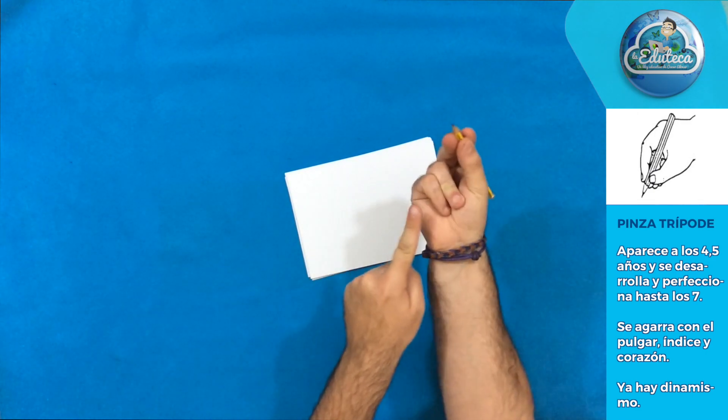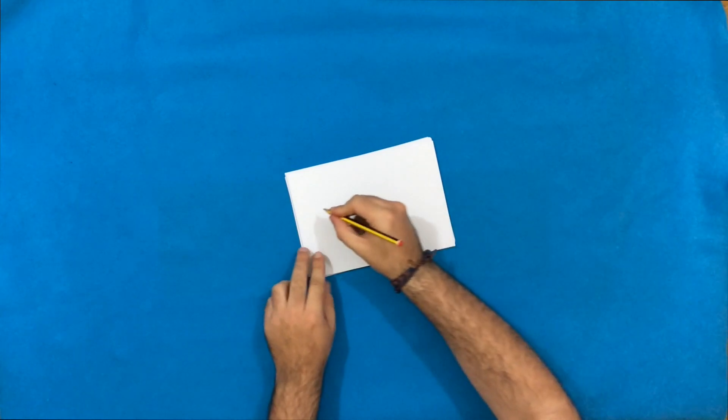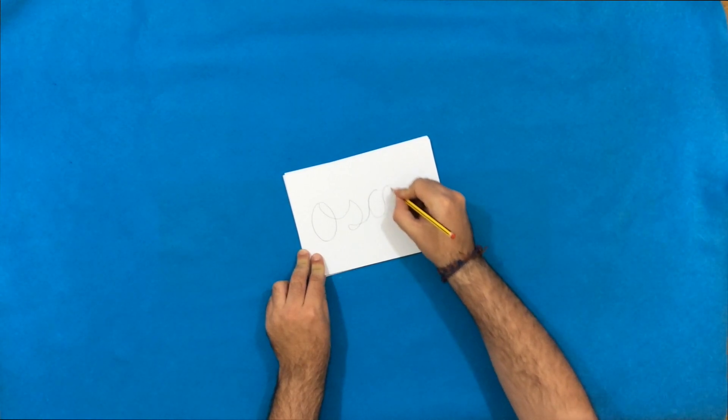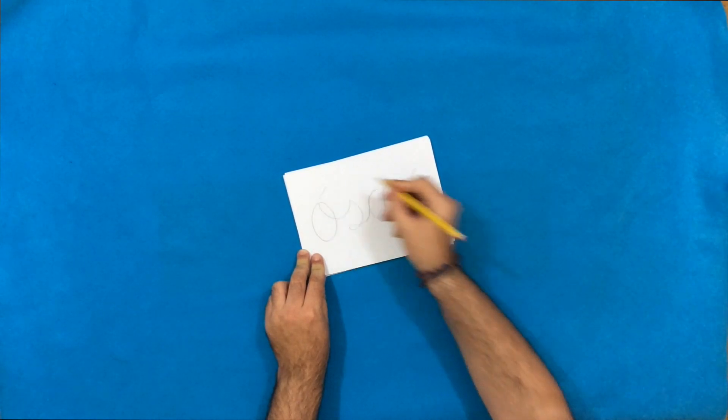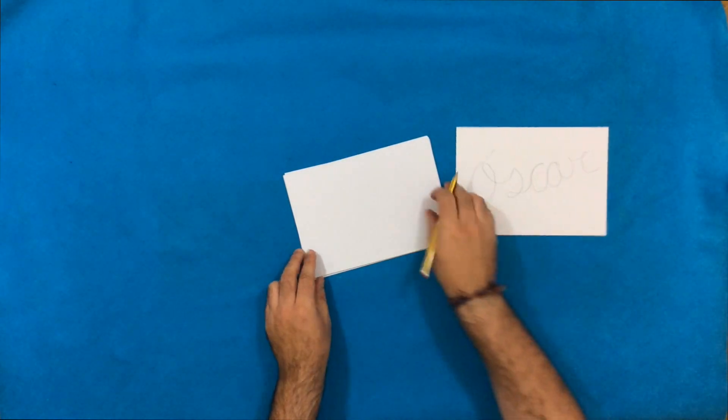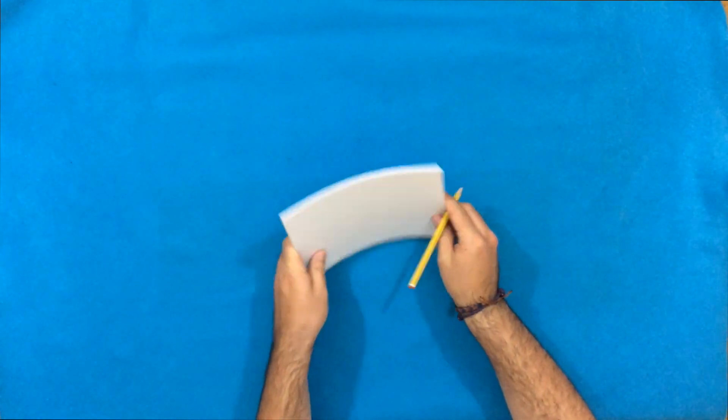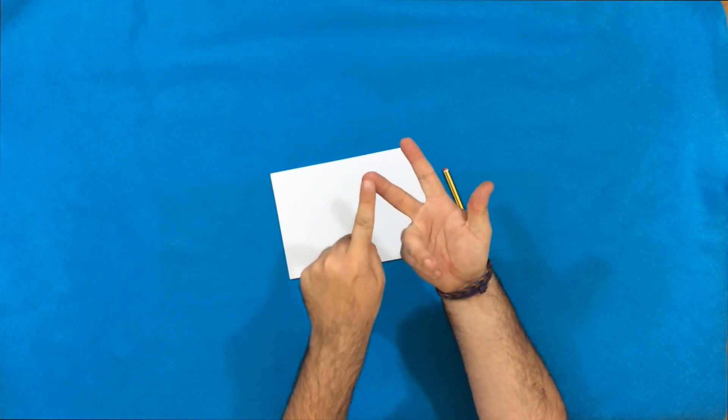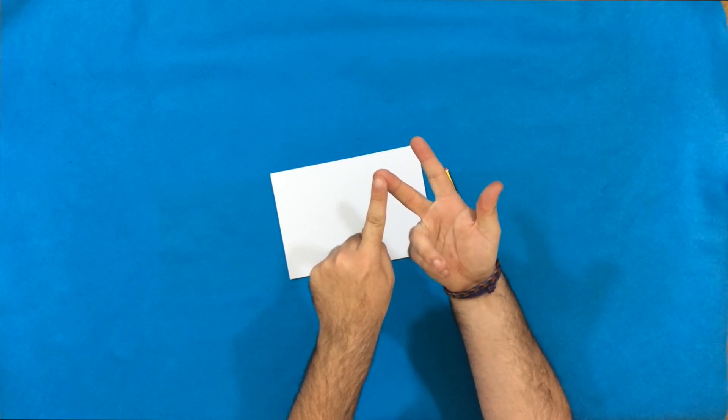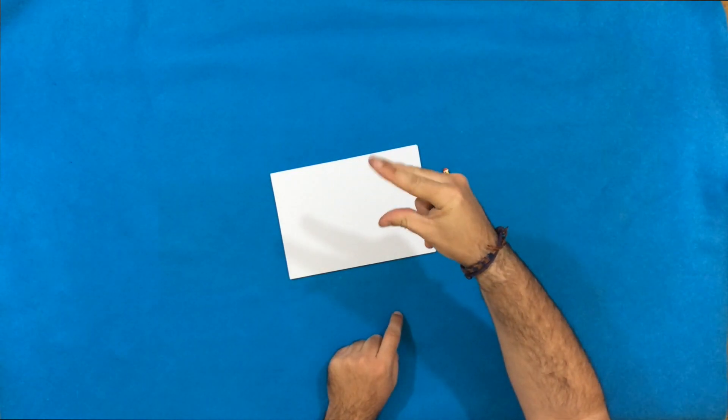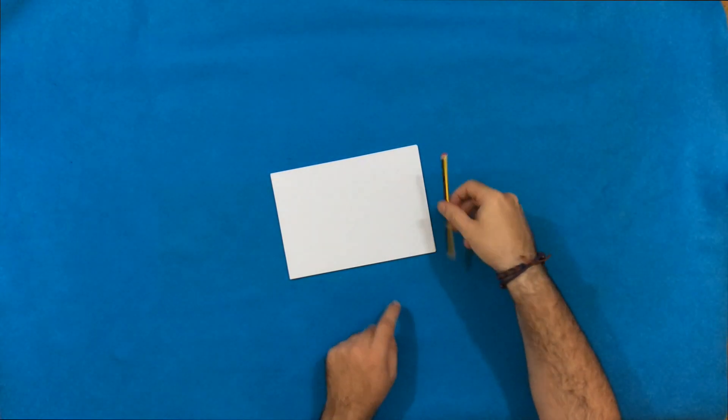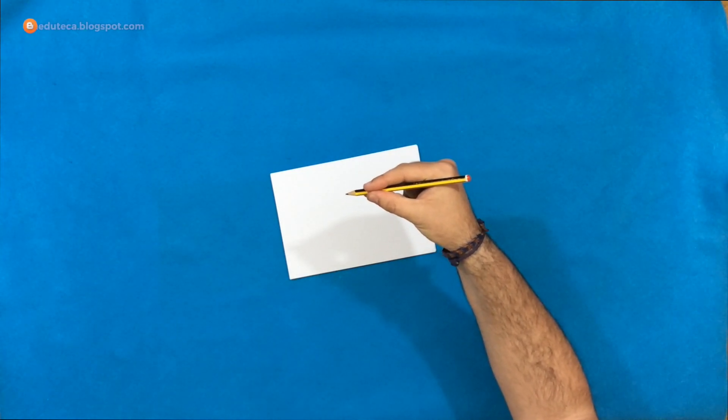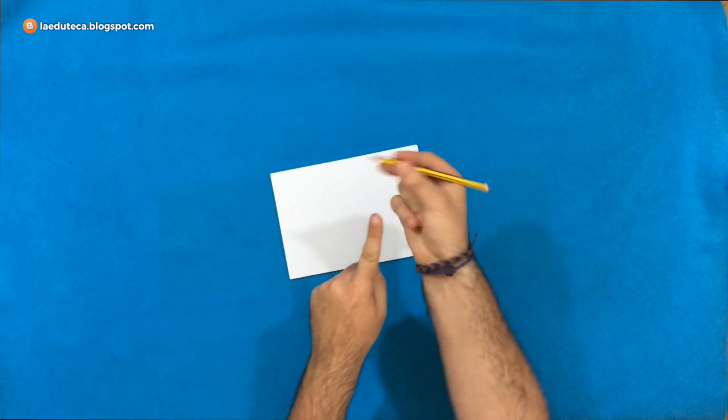En esta fase del desarrollo del agarre del lápiz debemos tener en cuenta que debemos diferenciar entre dos partes. El dedo pulgar, índice y corazón que se llaman parte radial que van a aportar un control más dinámico y precisión en el trazo. Y por otro lado el dedo anular y meñique de la parte cubital que van a aportar estabilidad a la hora de escribir. Aquí lo veis, esta es la que aporta control dinámico y precisión a la hora de escribir y luego tenemos la otra que es la que nos va a aportar estabilidad, esta de aquí, la parte cubital.